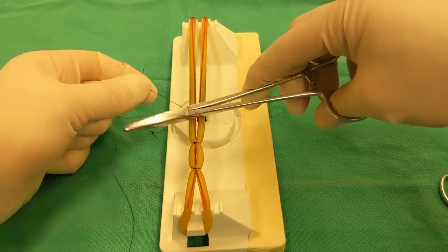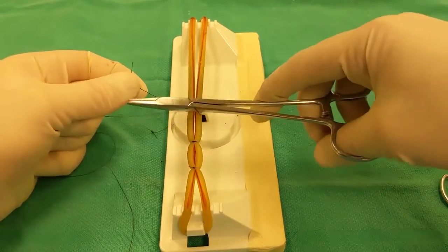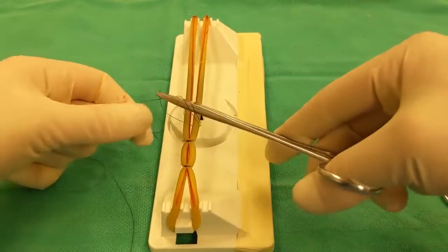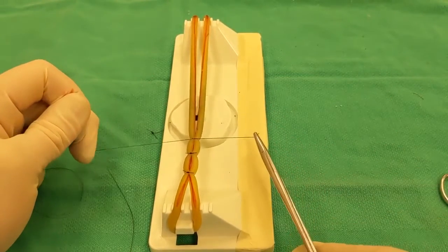So you go through it first, and then you wrap that needle strand of suture around your instrument, and then you grab your suture tag and pull it back through that loop and tighten.